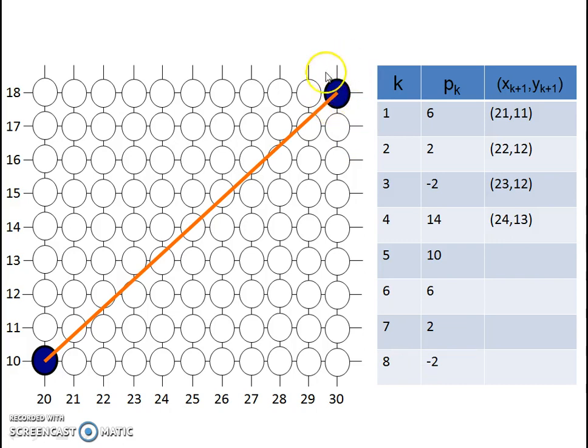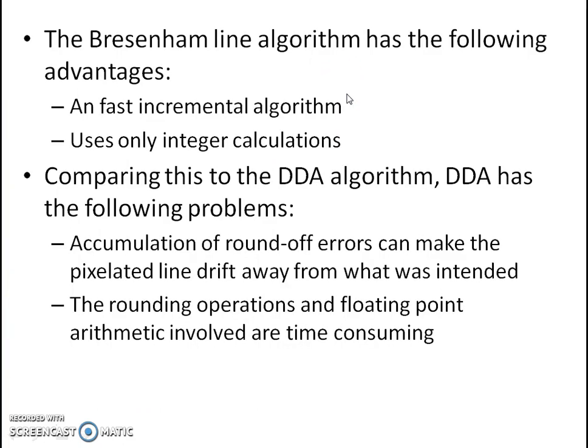There are some advantages of the Bresenham Algorithm over the DDA Line Algorithm. The Bresenham Line Algorithm is a fast incremental algorithm and uses only integer calculations. In comparison, DDA accumulates round-off errors which can cause the pixel line to drift from the intended line. Additionally, the rounding operations and floating-point arithmetic in DDA are time-consuming. That is why the Bresenham Line Algorithm is more accurate and more efficient than the DDA Line Algorithm.